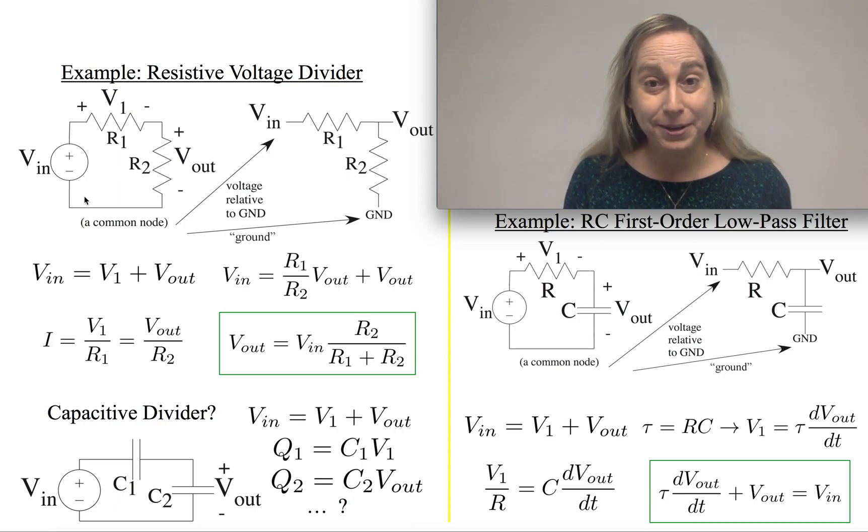There's nowhere else for the current to go. It can't go running out the nodes. It's just there. So the next thing to notice, Kirchhoff's voltage law says, well, the sum of the voltages Vin, V1, and V2 would all have to equal zero.